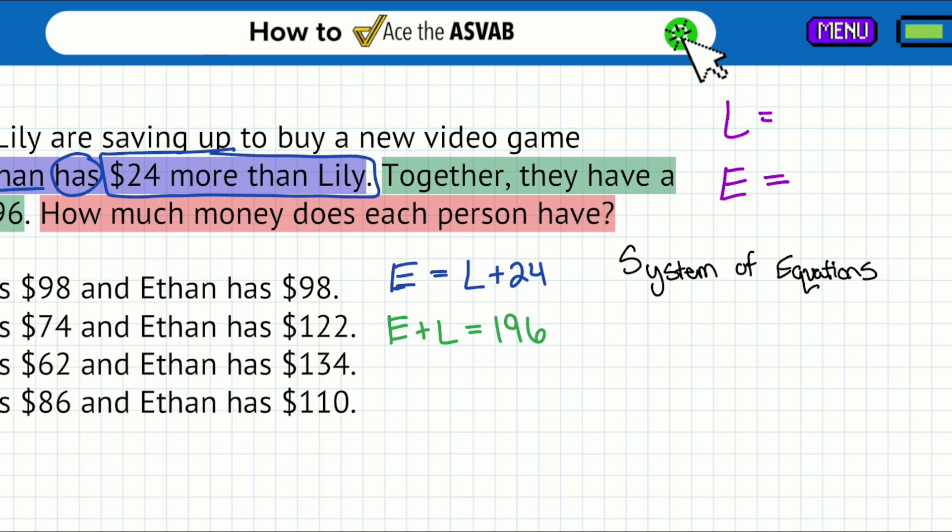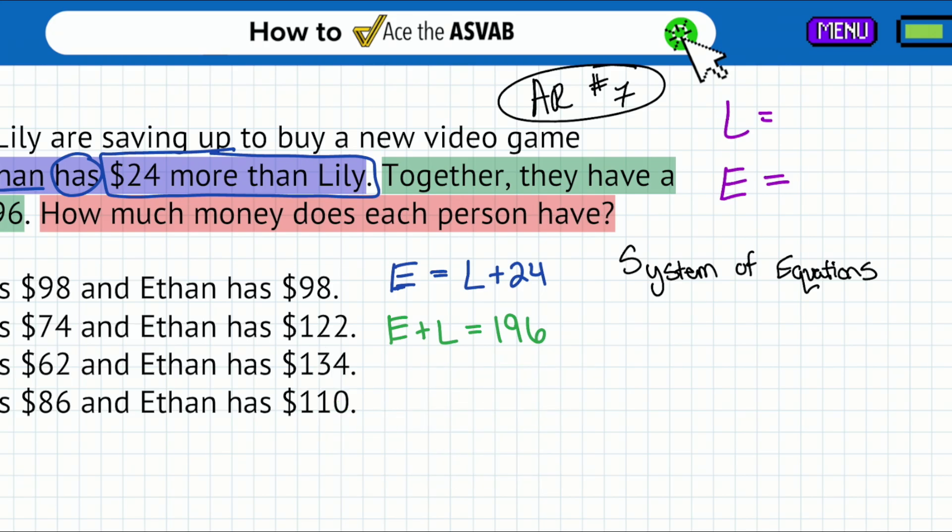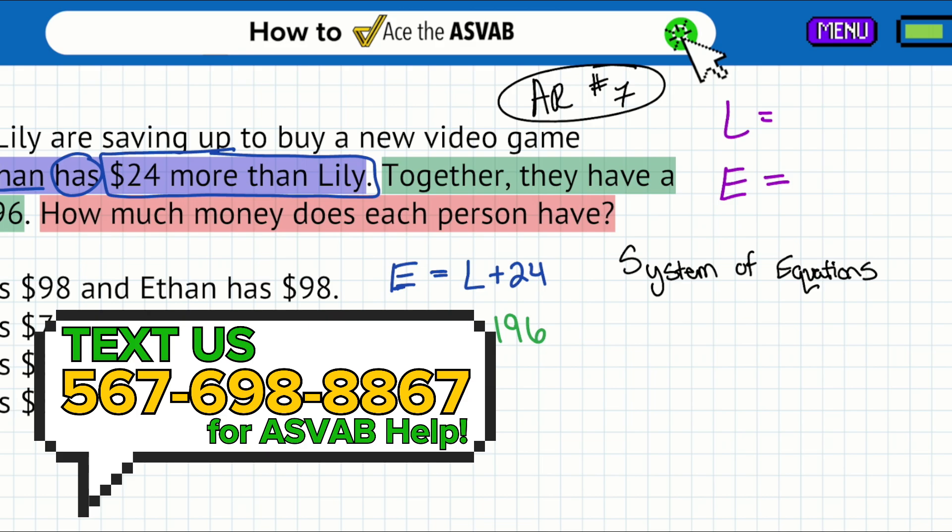For my party people that are in my program, this is going to be found in Arithmetic Reasoning Unit Number 7. Remember that for those of you who are in the program, you're going to get thousands of practice questions with step-by-step solutions, a ton of lesson recordings, guided practice videos, worksheets, everything you need. For those of you who don't have the program, remember that we are having our Memorial Day sale right now and you can save huge on the best program in the nation. Check the link in the description or shoot my team a text at 567-698-8867.